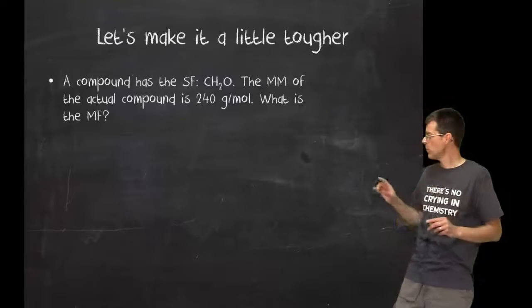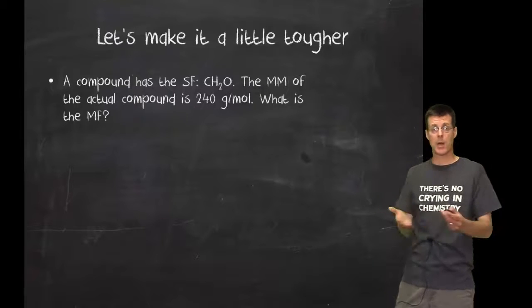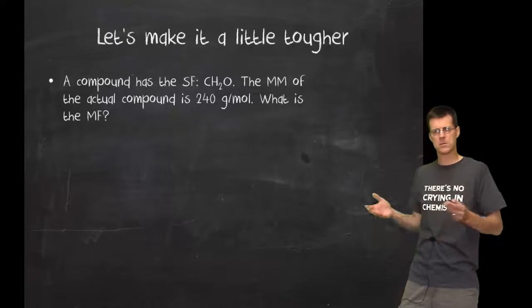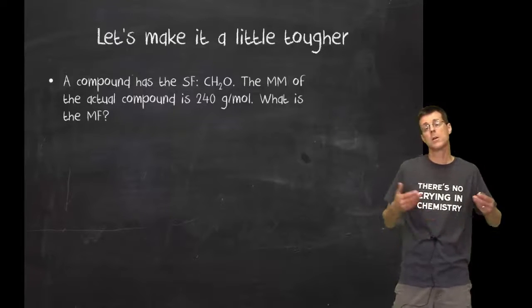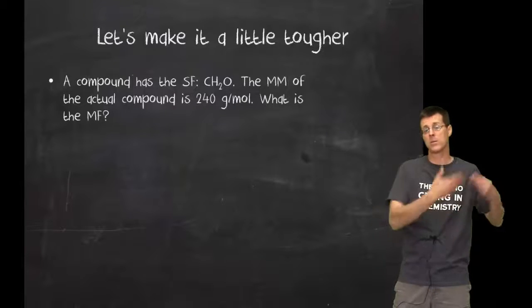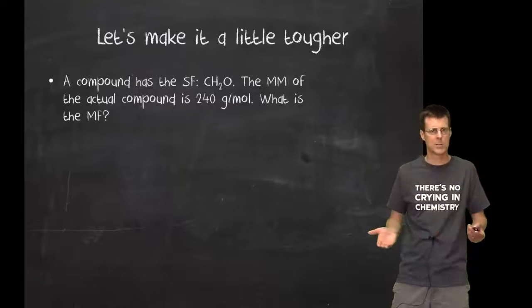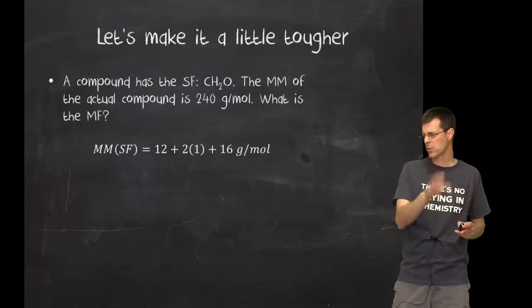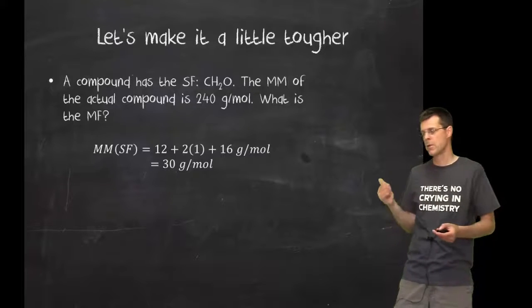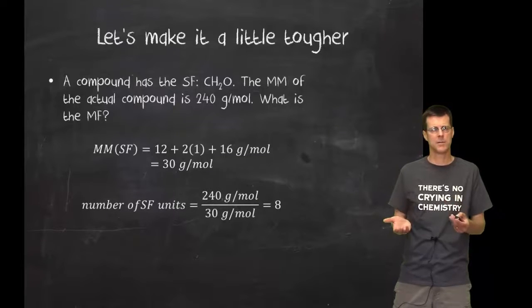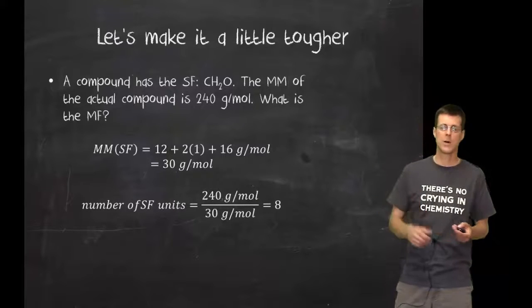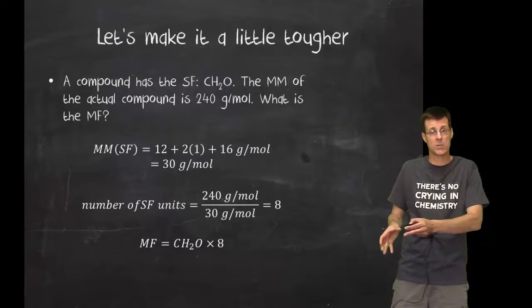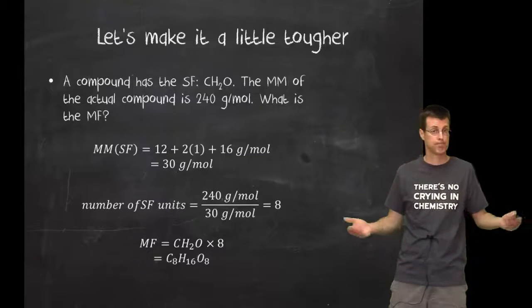Make it a little bit tougher. I have a compound where I've figured out the simplest formula. Hey, I know how to do that. And then I know that the total compound, the final compound, has a mass of 240 grams per mole. What's the molecular formula? Well, I need to do the same thing. Total mass divided by the mass of each block. How big is the block? Well, I've got the formula, so I can figure that out. The molar mass of the simplest formula, that's one carbon, two hydrogens, and one oxygen. Add them up, 30. Total mass divided by that new block mass, 240 divided by 30, and I come up with 8. So my simplest formula is the building block. I have 8 of those units to give me the molecular formula. That's all there is to it.